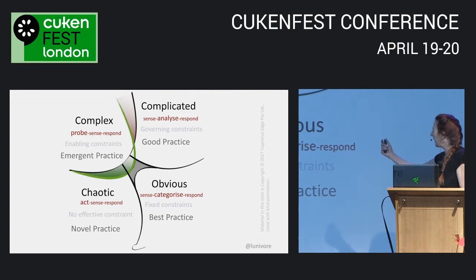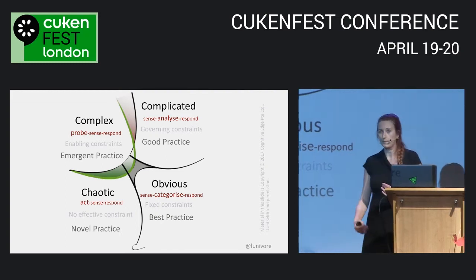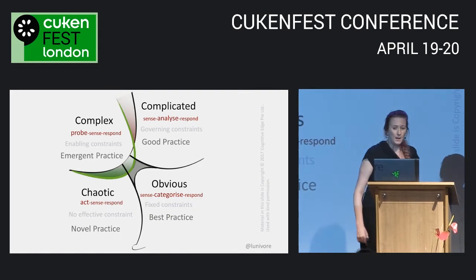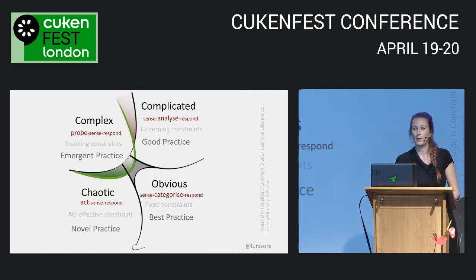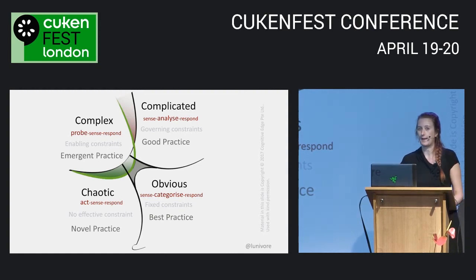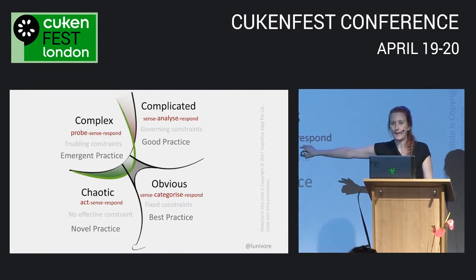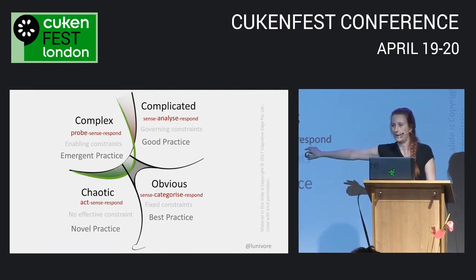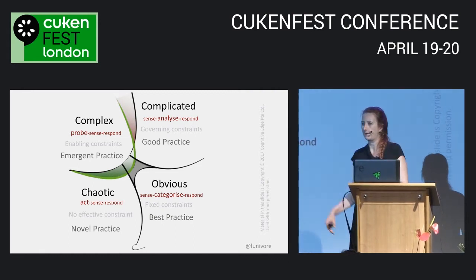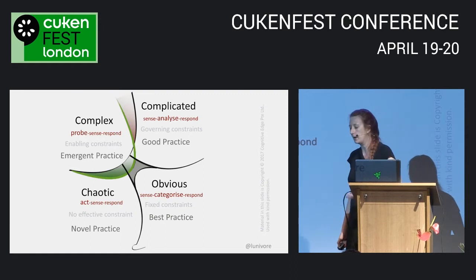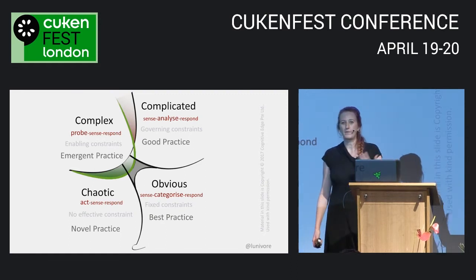It's got five domains, including one in the middle, and it describes different problems you encounter. On the left-hand side, the obvious and complicated problems are predictable — they have a known outcome, they're mechanical or scientific things where you do the same thing again and again and get the same result. Down here we have the chaotic domain — chaos is not normally a good place to be; it's accident and emergency, urgent production bugs. Our main problem comes with the complex domain, where things emerge — things we've never done before, where we make discoveries.